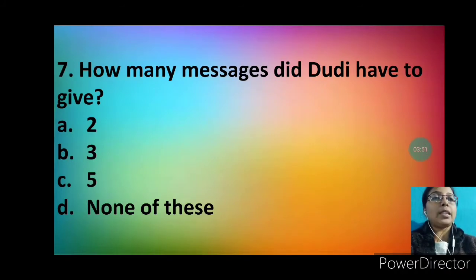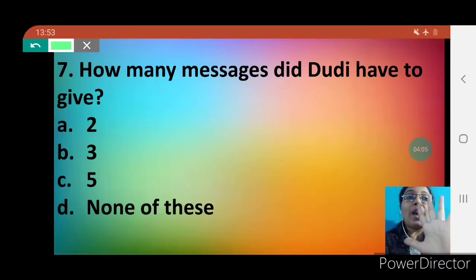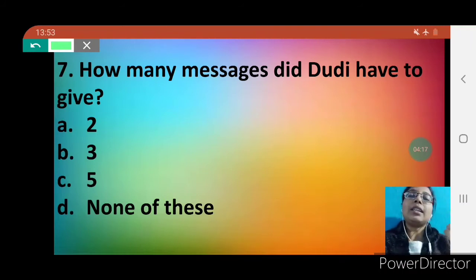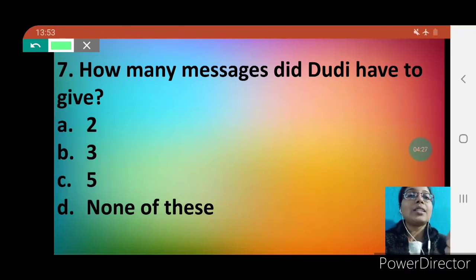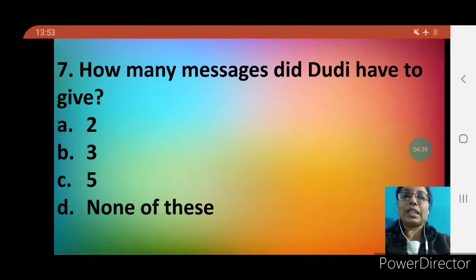Question number 7: how many messages did Doody have to give? Option A is two, B is three, C is five, D is none of these. We all know that Doody had to give two messages to his parents. One was about the appointment of Ms. Gina with a dentist, and the second was that Mr. Thomas Wolfe was visiting his father that night. So the correct answer is option A — two messages.